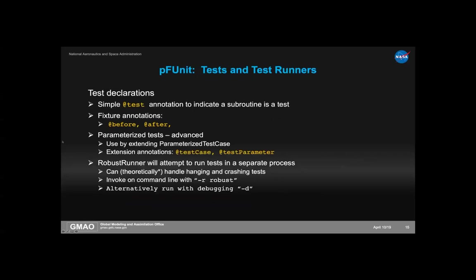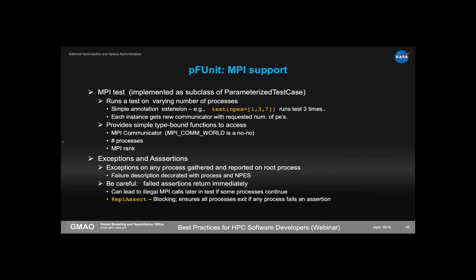At the end of an MPI test, all exceptions thrown by any process are gathered onto the root process, decorated with a string indicating which process generated them. One thing to be careful about: if one process fails an assertion but others continue and attempt blocking MPI communication, you'll get a hang. Using an MPI assert — which is itself blocking — ensures that if any process fails, all of them fail and return out of the code. In practice, with a small number of asserts in a test, this is rarely an issue.